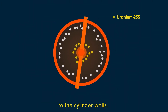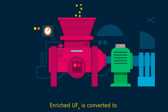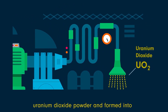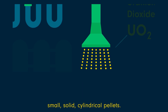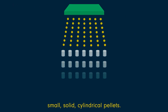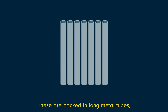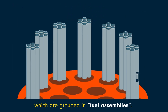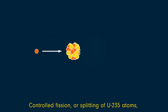At a basic level, nuclear power is the practice of splitting atoms to boil water, turn turbines, and generate electricity. During fission, a neutron bombards a uranium atom, releasing more neutrons and triggering a chain reaction.